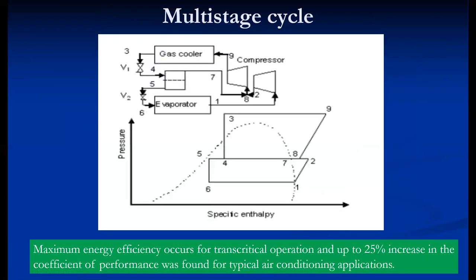The third cycle is multi-staging. Multi-staging is especially used when the system demands higher temperature limits — mainly when the CO2 refrigeration system is used for refrigeration applications, because refrigeration handles higher temperature limits than air conditioning applications. Due to multi-staging, the point shifts towards the left — from where it arises in simple systems to point number six — and there is almost 25% saving of energy, or a 25% increase in the coefficient of performance. Multi-staging also saves energy, so a significant improvement in COP happens in this case.